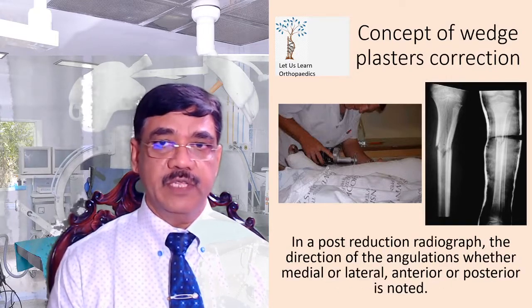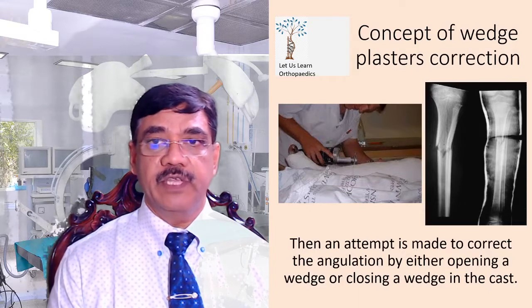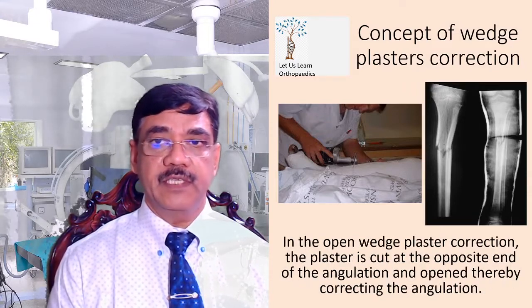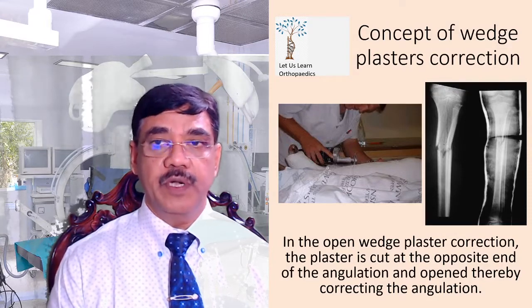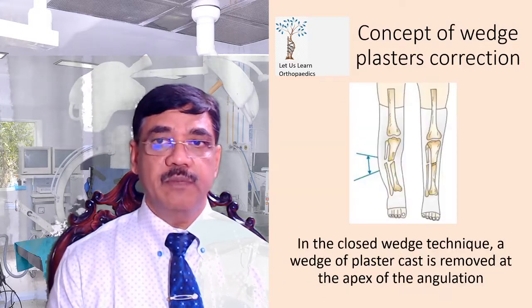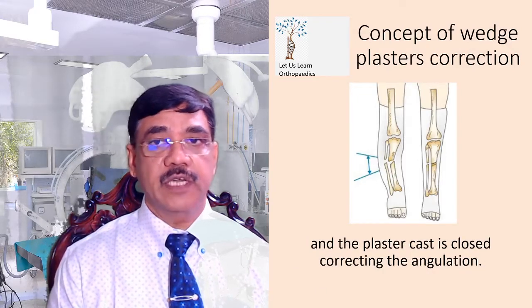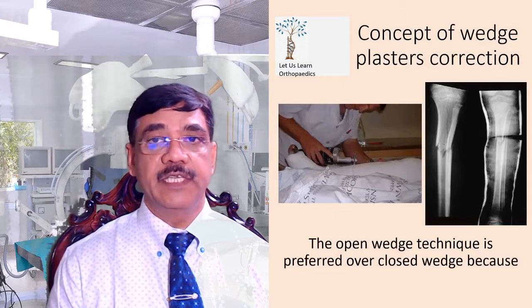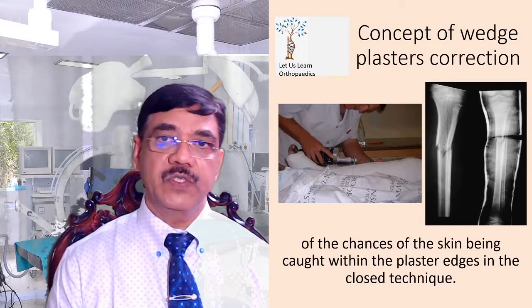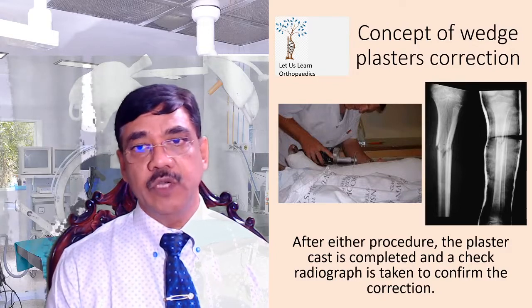In the post-reduction radiograph, the direction of angulation — whether medial or lateral, anterior or posterior — is noted. An attempt is made to correct the angulation by either opening a waist or closing a waist in the cast. In open waist plaster correction, the plaster is cut at the opposite end of the angulation and opened to correct it. In closed waist technique, the waist is removed at the apex of angulation and the cast is closed. The open waist technique is preferred as there is a risk of skin being caught within the plaster edges in the closed technique. After either procedure, the cast is completed and a check radiograph is taken.